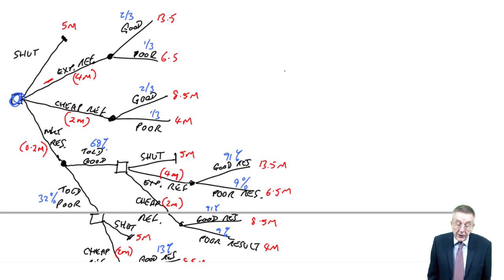Well, expensive research, of course, we've got the uncertainty. We pay our four, we might get back 13 and a half, we might get back six and a half. And so, in the normal way, whenever there's uncertainty, we'll replace the uncertainty with the expected value. And I'll label the points. What colour shall I use? Green.